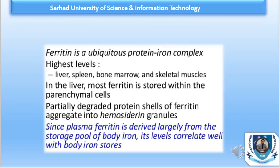Ferritin is a protein-iron complex and is mostly found in all tissues, but particularly in the liver, spleen, bone marrow, and skeletal muscles. A very small amount of ferritin circulates in the serum, with normal values being 15 to 300 micrograms per liter. Serum ferritin level reflects the iron stores, and serum ferritin is usually very low — around 12 micrograms per liter — in iron deficiency anemia.